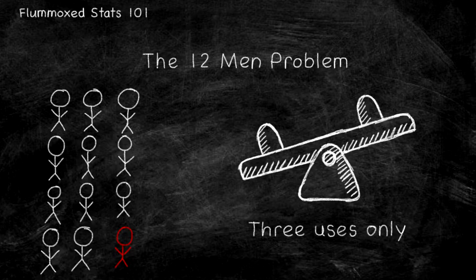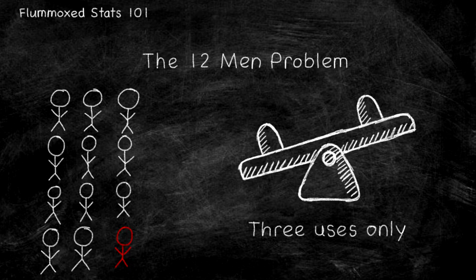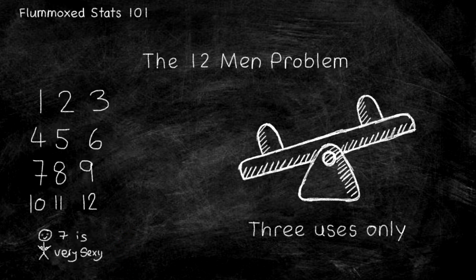So, a solution. It's very mathematical indeed and does not rely on chance. However, there is a very small margin of failure. To begin with, let's number our island men from one to twelve. I like man number seven personally. However, let's not get sidetracked.